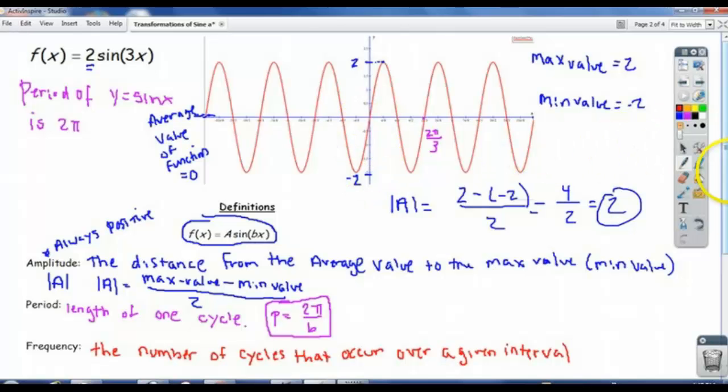So look at our picture here. The interval goes from 0 - well, it goes from negative 2π to 2π, but let's just look from 0 to 2π. I'm going to highlight how many cycles of the graph occur from 0 to 2π. We can count: there's one, there's two, there's three. So there are three cycles that occur on the interval 0 to 2π.